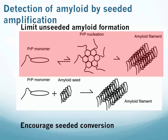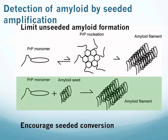In order to limit the unseeded reaction, we use things like particular pHs, salt concentrations, or SDS concentrations, which limit that spontaneous or unseeded reaction from happening. However, some of the same conditions which affect unseeded amyloid formation also affect seeded conversion, so we don't want to limit the formation of amyloid too much — otherwise the reaction won't continue in a rapid or sensitive fashion. I'll talk more about the particular conditions that lead to limiting unseeded amyloid formation and encouraging seeded formation in later slides.